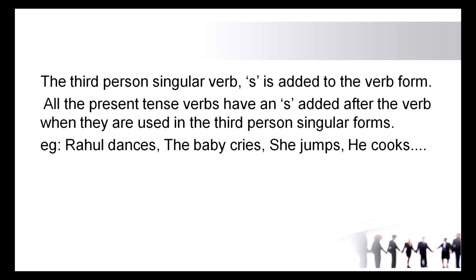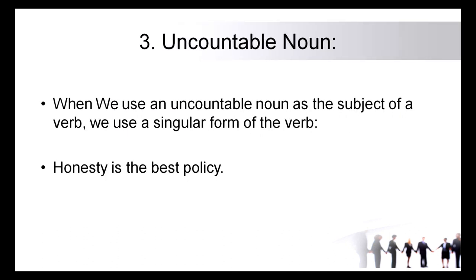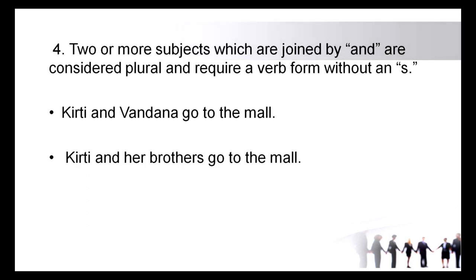Rule three: when we use an uncountable noun as the subject — something we cannot count, something beyond number — we use a singular form of the verb. For example, 'honesty is the best policy.' Honesty is the uncountable noun, so we use 'is' rather than 'are.' Another example: 'sweetness is a good quality.' When an uncountable noun appears as the subject, we always pair it with a singular verb.